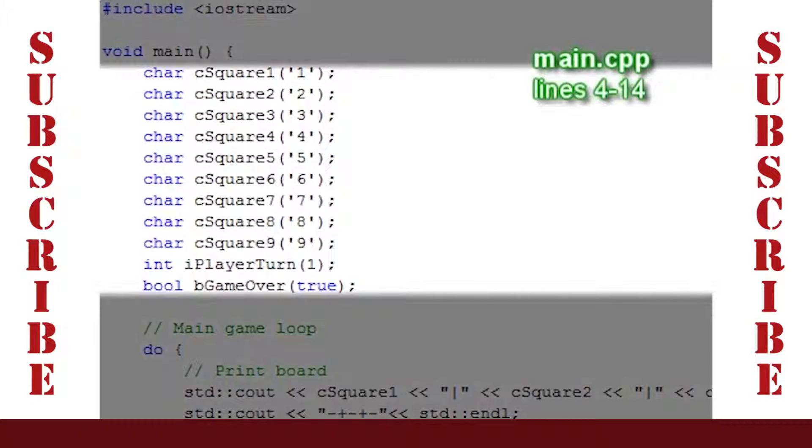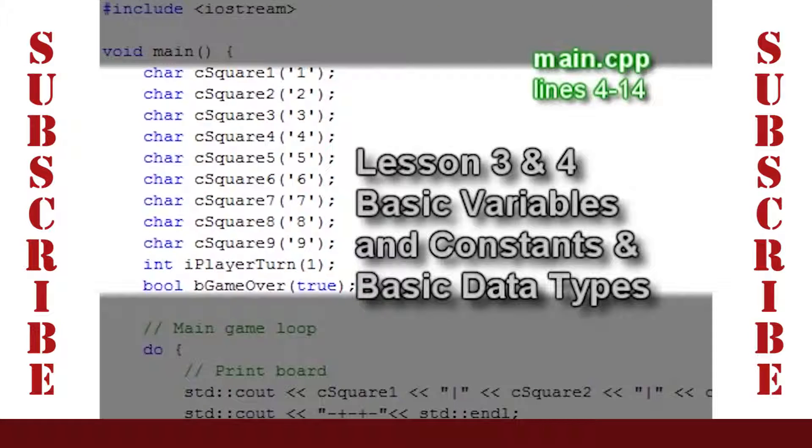This portion of code is the initialization that was mentioned. The variables for squares are initialized with the characters 1 through 9. The player turn is initialized to 1 since player 1 will take the first turn. Game over is initialized to true, but that doesn't really matter for this program. Recall that we covered this material in lessons 3 and 4.